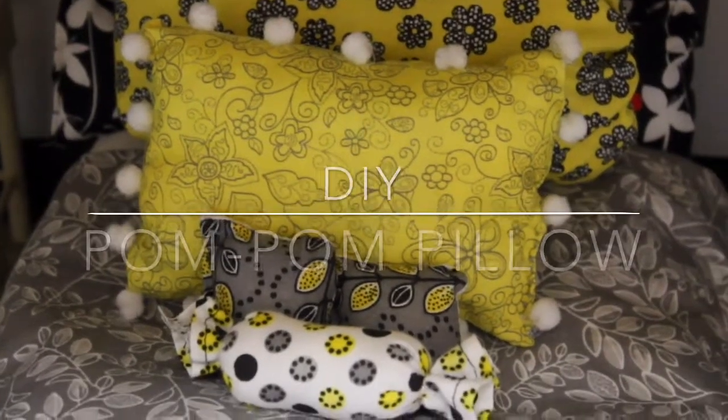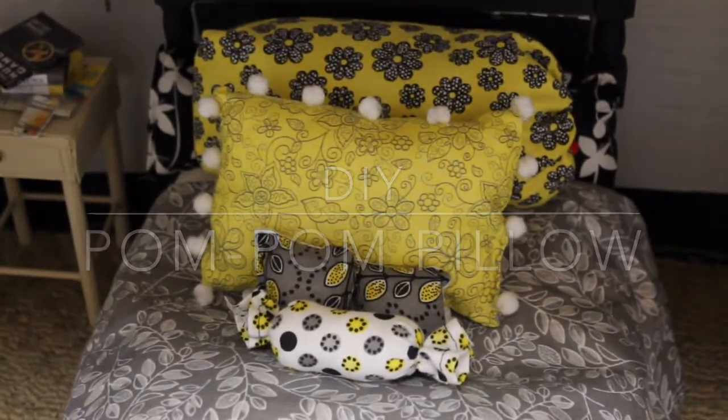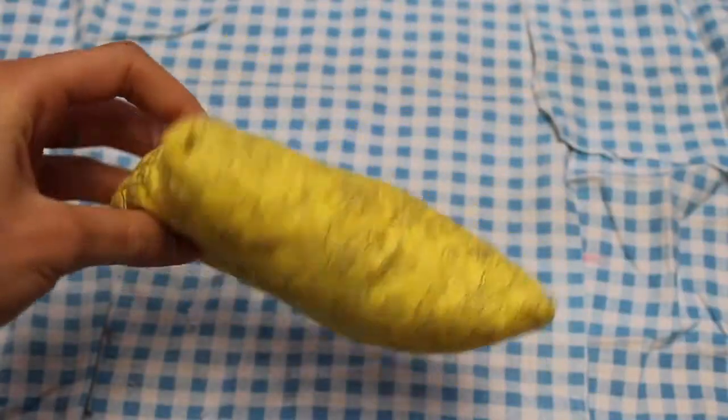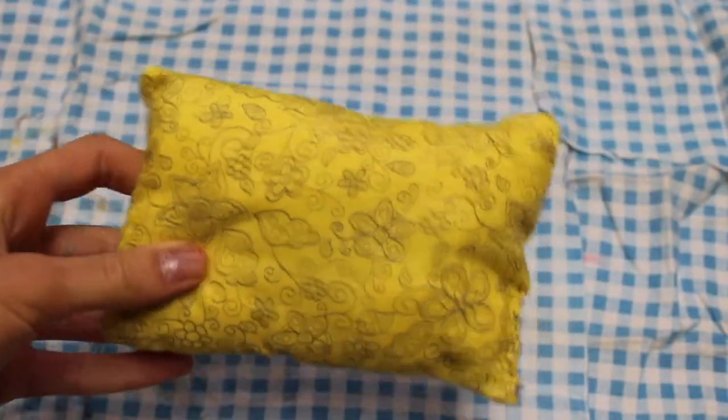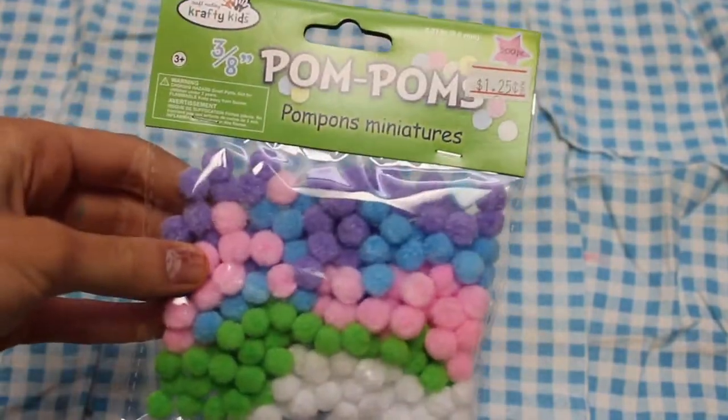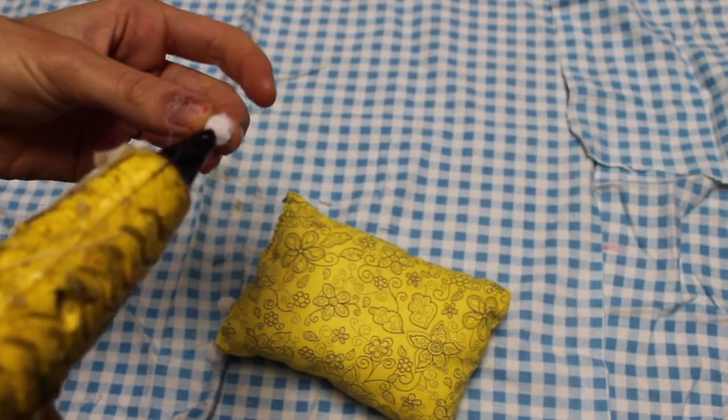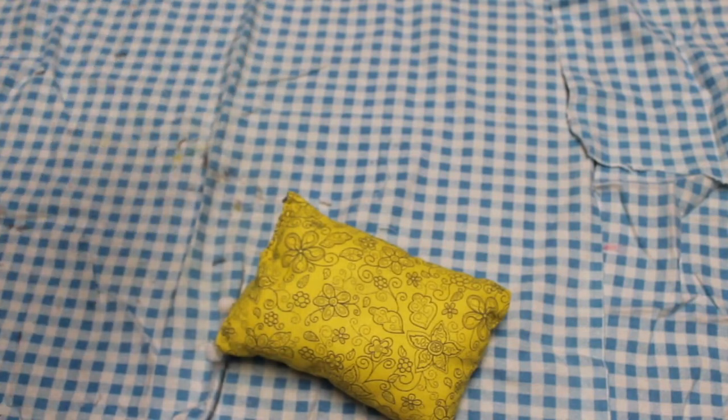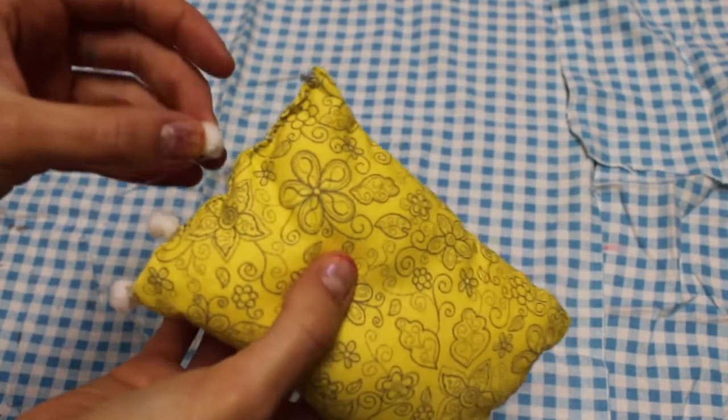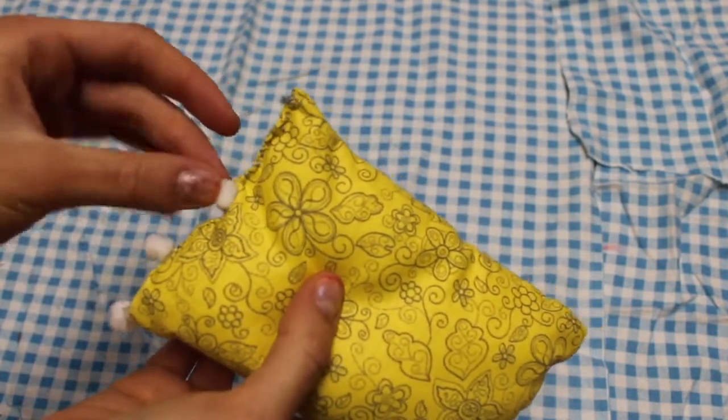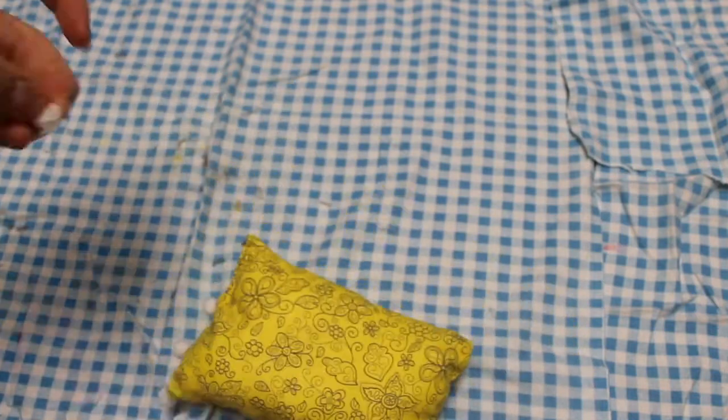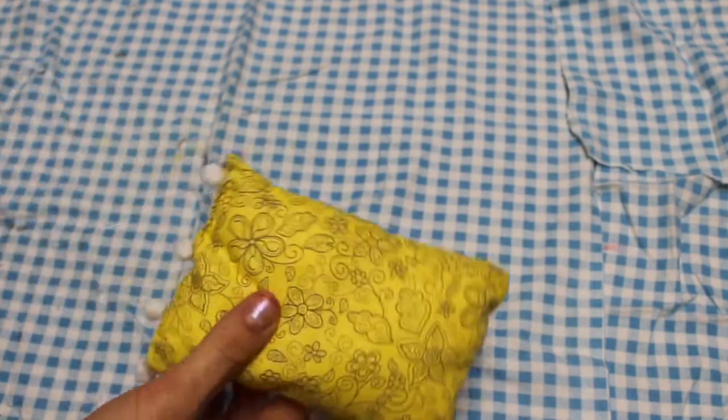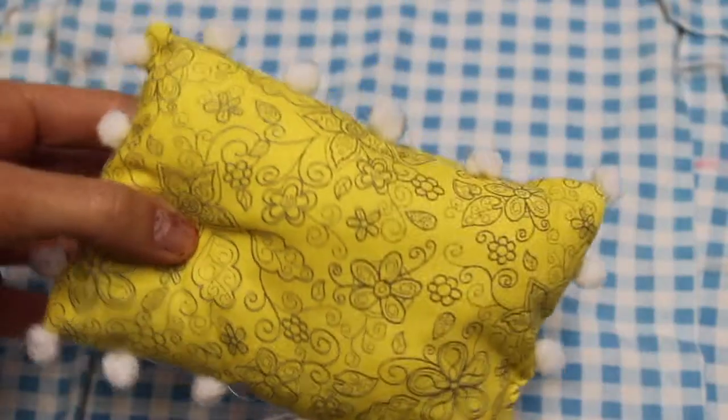Okay, now we're going to make this super simple pom pom pillow. This is beyond simple. You're just going to need a pillow, this is one that was just in her room, and some pom poms and hot glue to put it on. It is so simple, you're just going to take the pom pom and glue them onto your pillow. I chose to do them all the way around, but you can really do whatever you want. And there's your pom pom pillow.